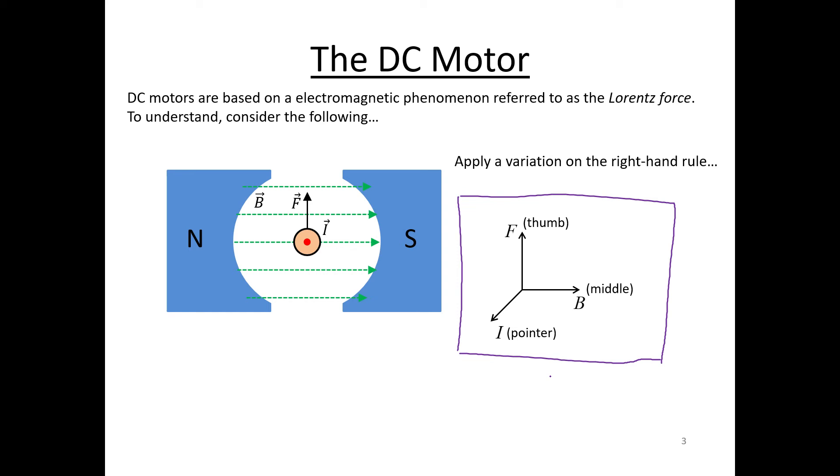Here, I'm doing this, you can't see it, but you should try it too. The current coming out of the screen, the field going to the right, and if you've done this correctly you should see your thumb pointing upward just like we've got in the diagram there.